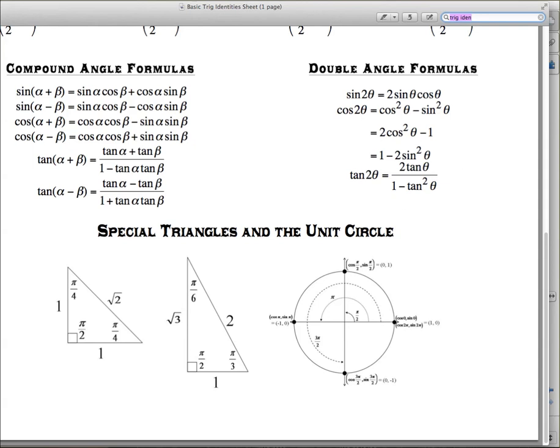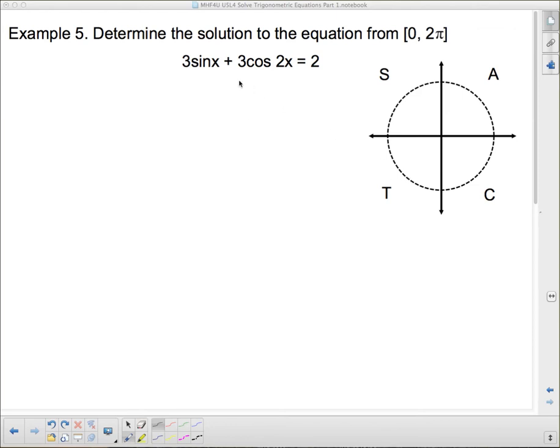Well, I told you before that it's best if we put it into all of the same trig ratio. We need to get it all in either sines or cosines or tans. So probably, since I can't swap this out for anything, I need to turn this into sines. So I'm going to change that into 1 minus 2sin²x.